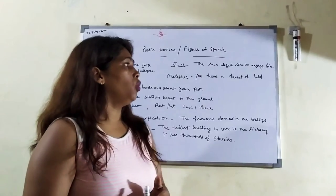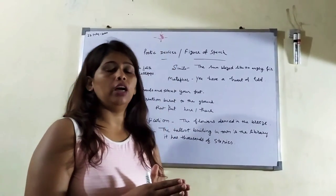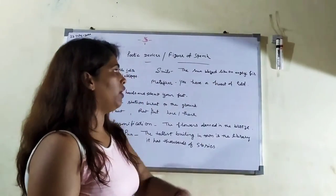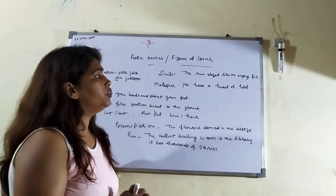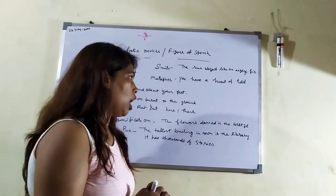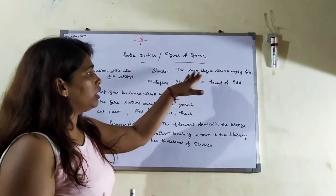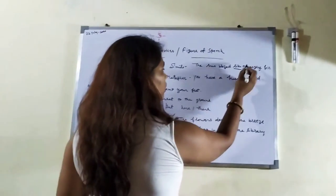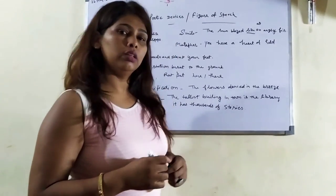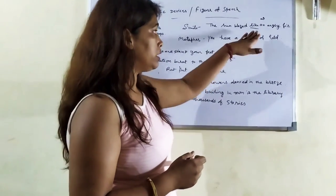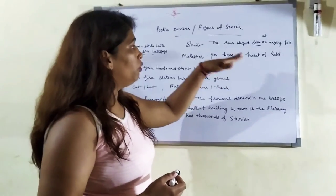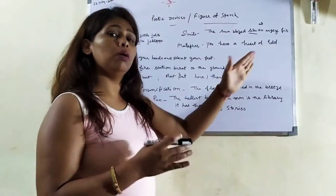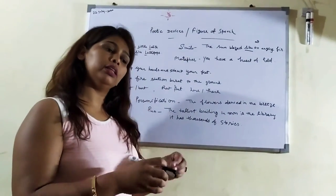For example, the sun shines like an angry fire. What does this mean? For comparison, you have a heart of gold.